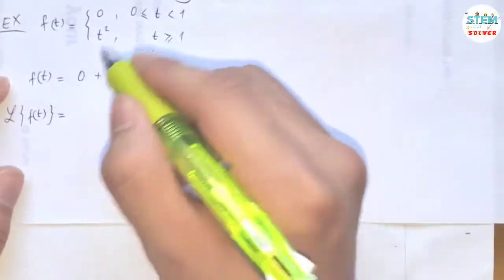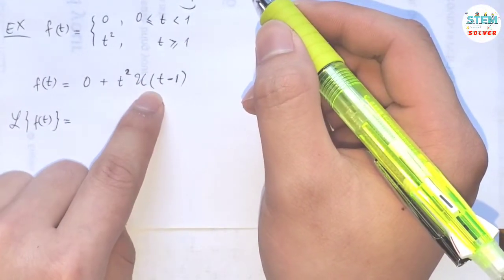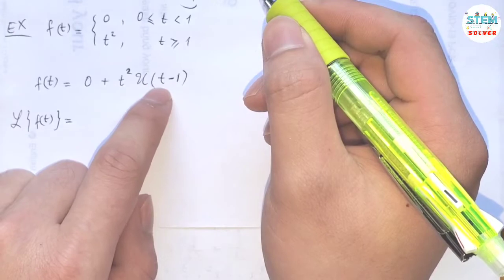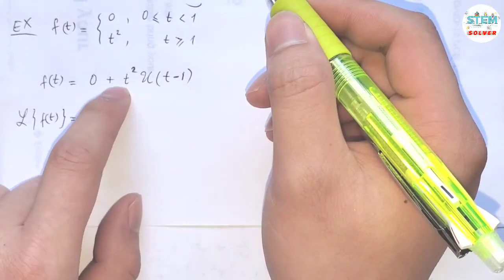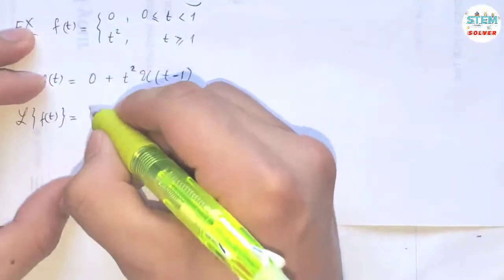So we have zero, just ignore it. To find the Laplace transform of this, the argument must match up. The argument is t minus one. Over here we just have t, so we need to have t minus one. So let's make that.